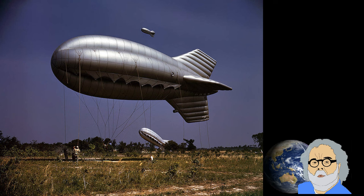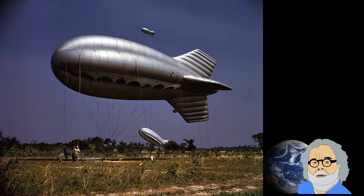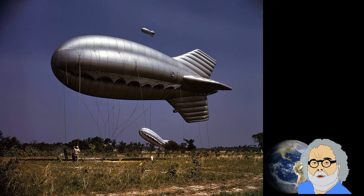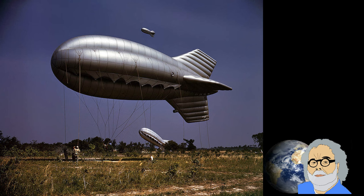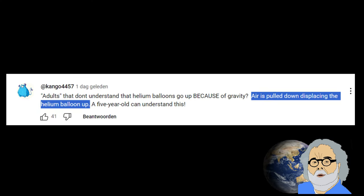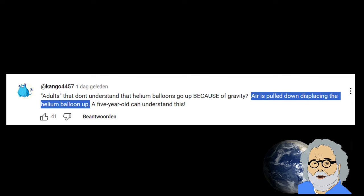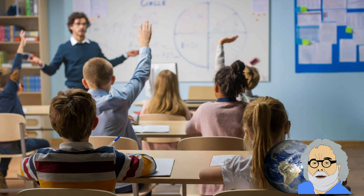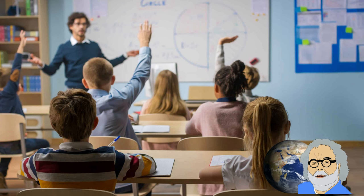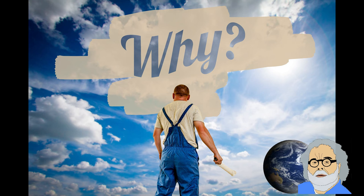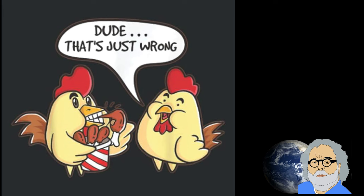He paints buoyancy as a battle between air that is pulled harder downward by gravity and the helium balloon that has a lesser downward force acting on it. Congo 4457 in the comments section says this: air is pulled down displacing the helium balloon up. You could say these are useful middle school explanations, were it not that the battle explanation doesn't explain why the helium balloon goes up and the displacing explanation is just wrong.